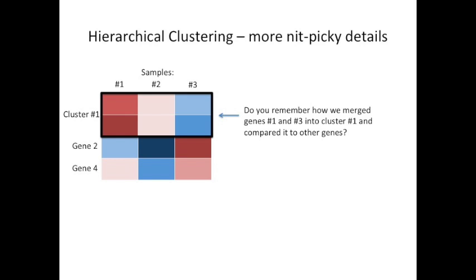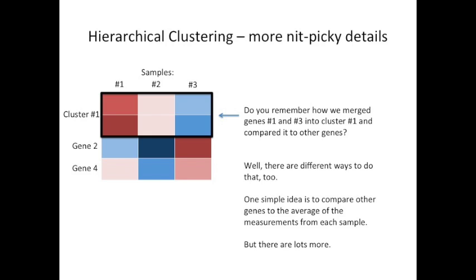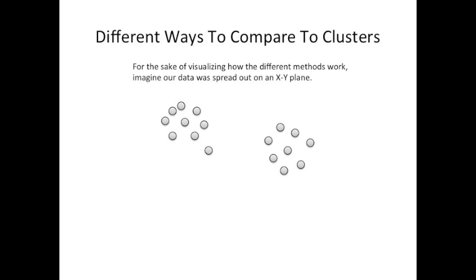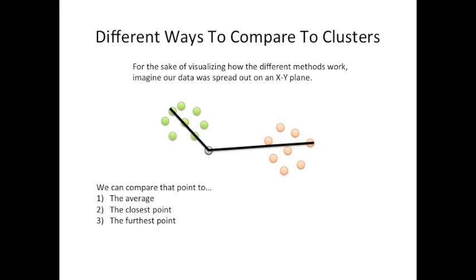Here's some more nitpicky details about how hierarchical clustering works. Do you remember how we merged genes 1 and 3 into cluster number 1 and then compared that cluster to the other genes? Well, there are different ways to do that, too. One simple idea is to compare other genes to the average of the measurements from each sample. For the sake of visualizing how different methods work, imagine our data was spread out on an XY plane. We can compare that point to the average, the closest point, the furthest point, and there are many other ways to do this.